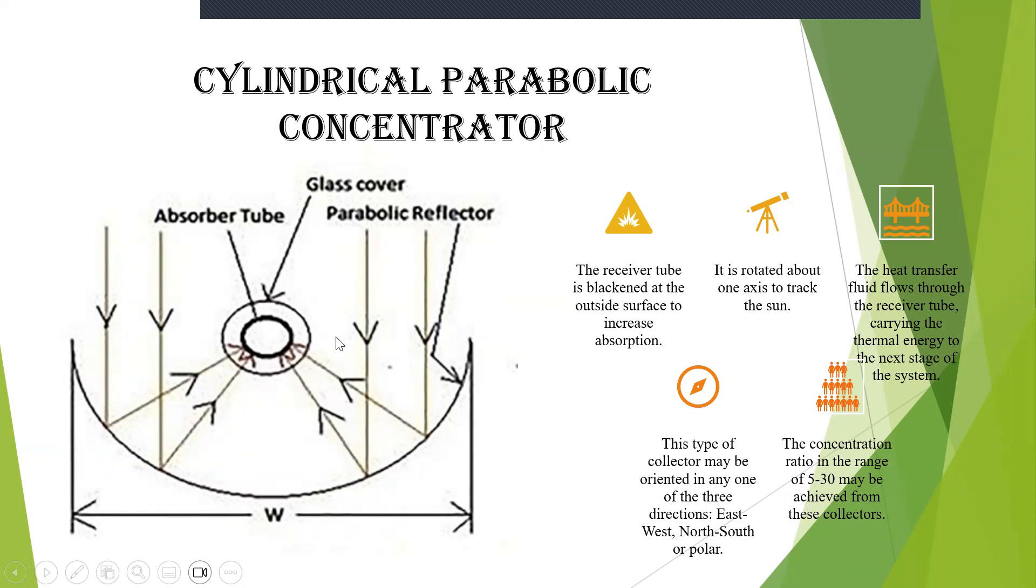The receiver tube will be blackened at the outside. Here you can see the tube is blackened at the outside. Why it is blackened is to increase the absorption. This is rotated about the axis, axis of the sun. How the sun has been rotating the same way it is rotating. Heat transfer fluid flows through the receiver tube and the thermal energy to the next stage of the system. This type of collector starts orienting in any direction based on which axis it is focused on. Now here you can say the concentration ratio will be ranging up to 5 to 30 because we are using cylindrical parabolic concentrator.